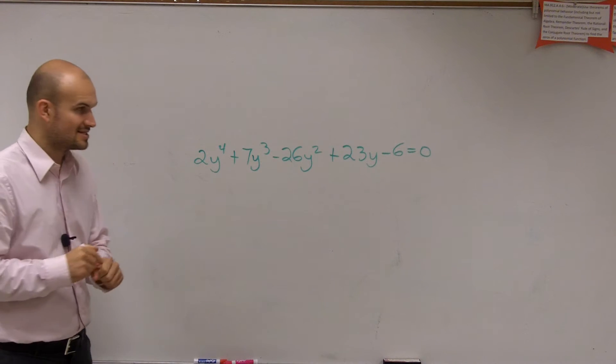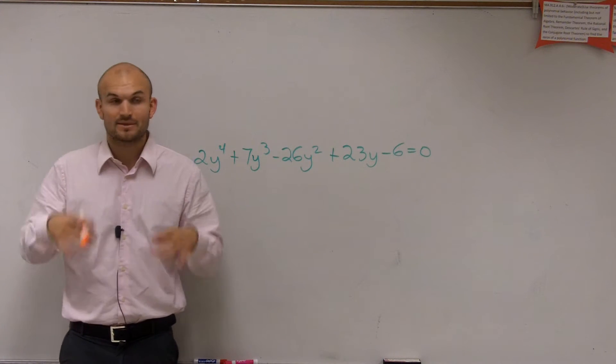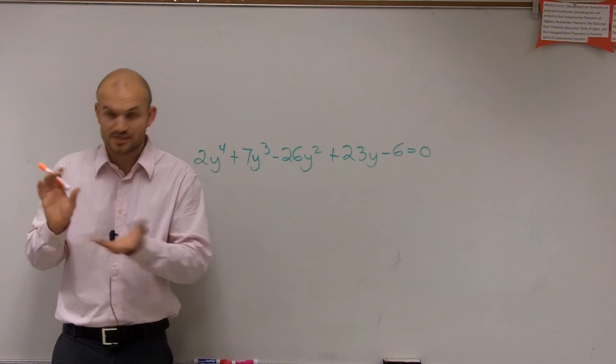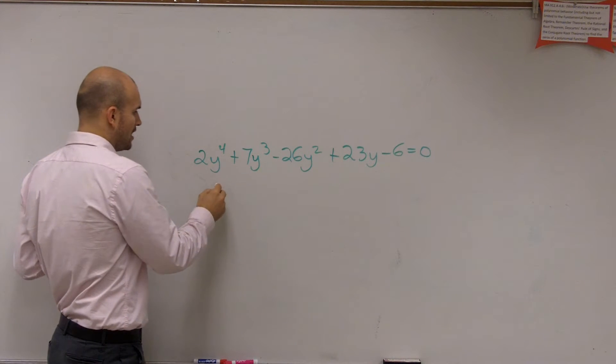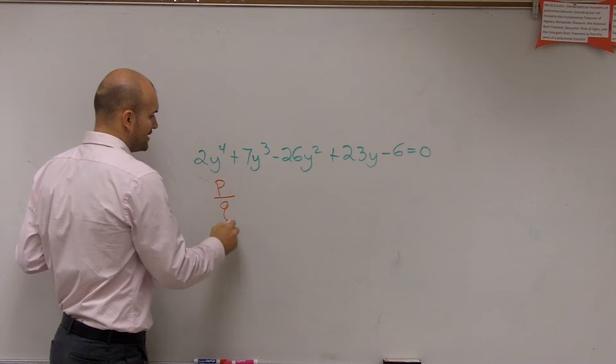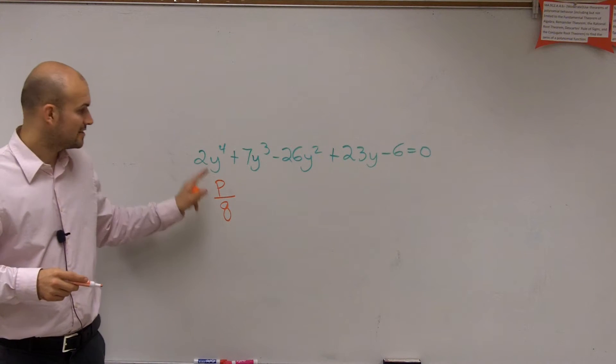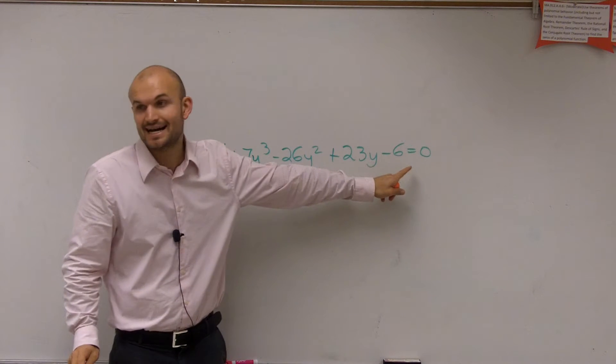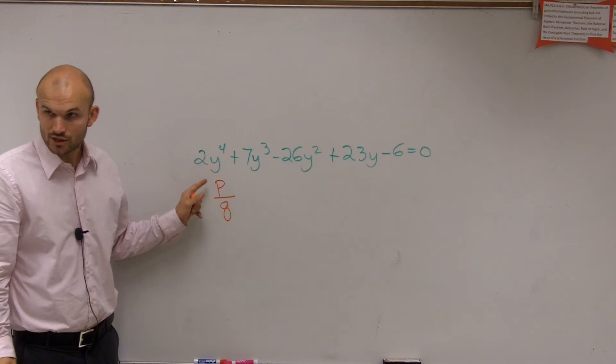What the rational zero test tells us is all the possible rational zeros, that means the rational solutions for our problem, the rational x-intercepts, can all be in the form of p divided by q, where p represents the factors of your constant, and q represents the factors of your leading coefficient.